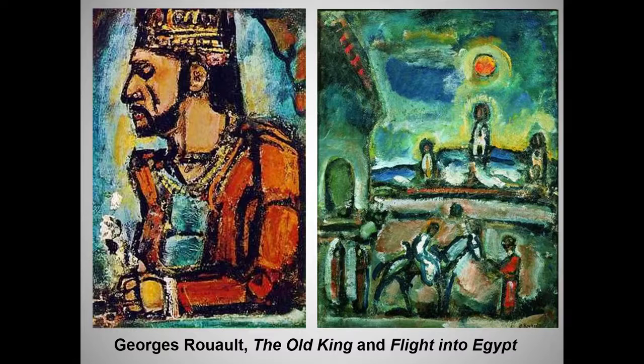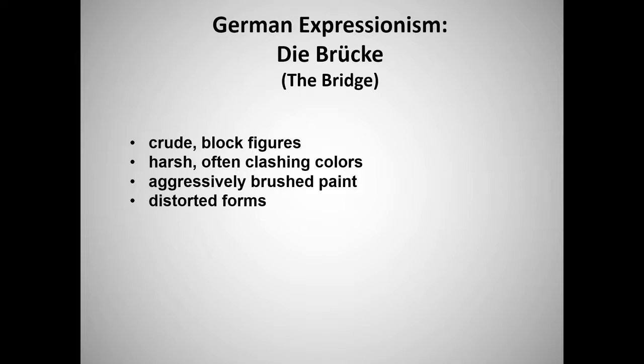Another prominent Fauve painter who does not appear in your textbook is Georges Rouault, a devout Catholic who painted many religious scenes. With that brief glimpse of the cheerful wild beasts, we now move east, where the outlook — political, philosophical, and artistic — becomes grimmer.